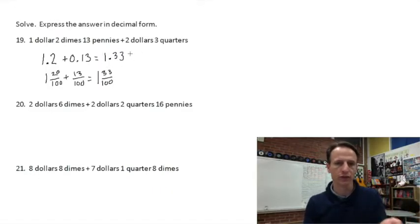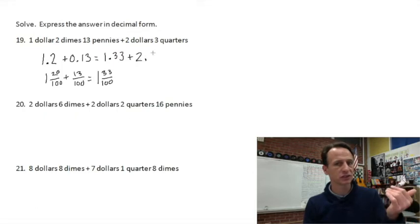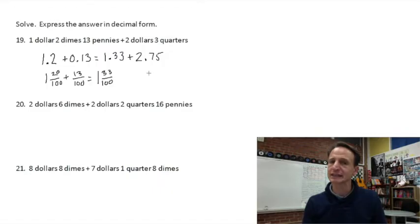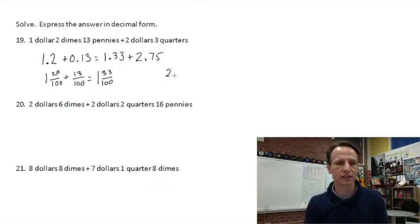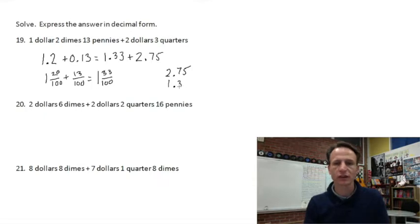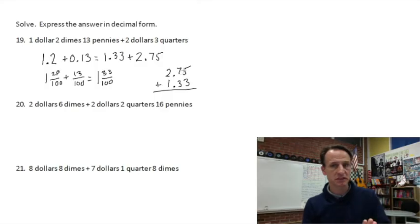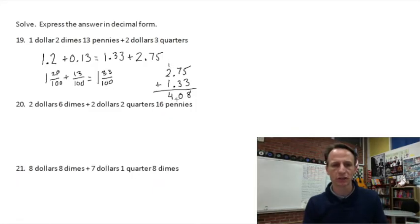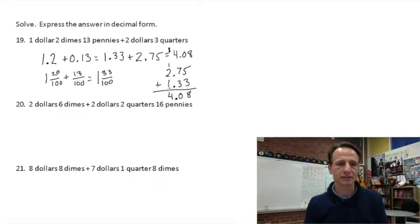Add to 1.33 a second amount: two dollars and three quarters. Three quarters = 75 cents. Adding vertically with place values aligned: ones under ones, decimal points aligned. 3 + 5 = 8, 3 + 7 = 10 — regroup: 1 + 1 + 2 = 4. Don't forget the decimal point. That gives us $4.08.